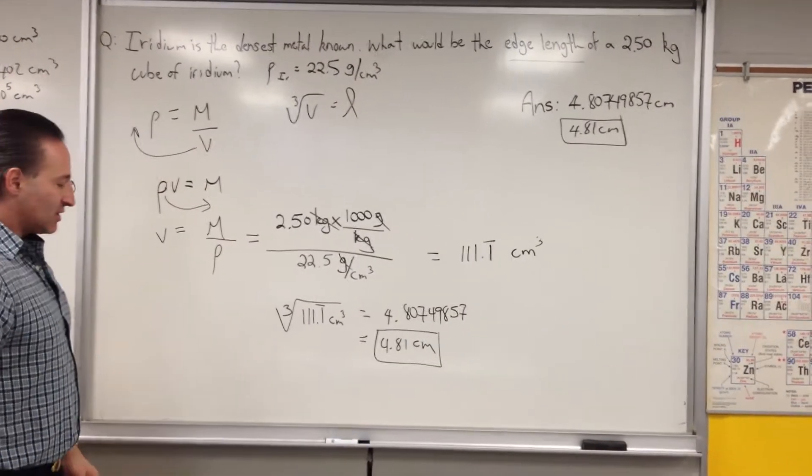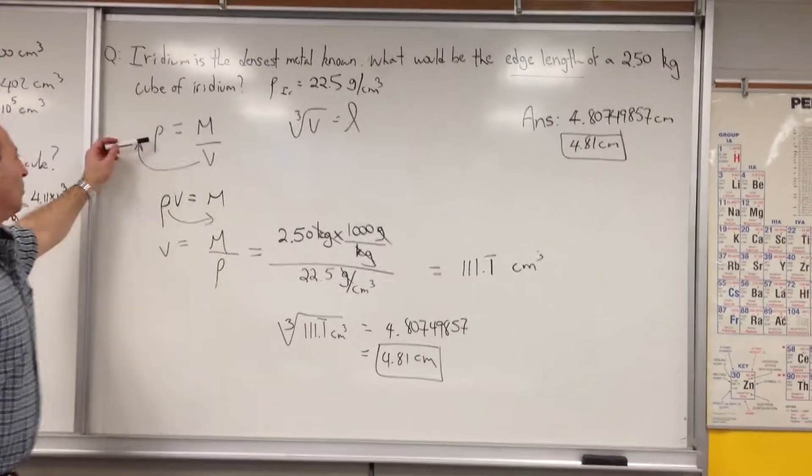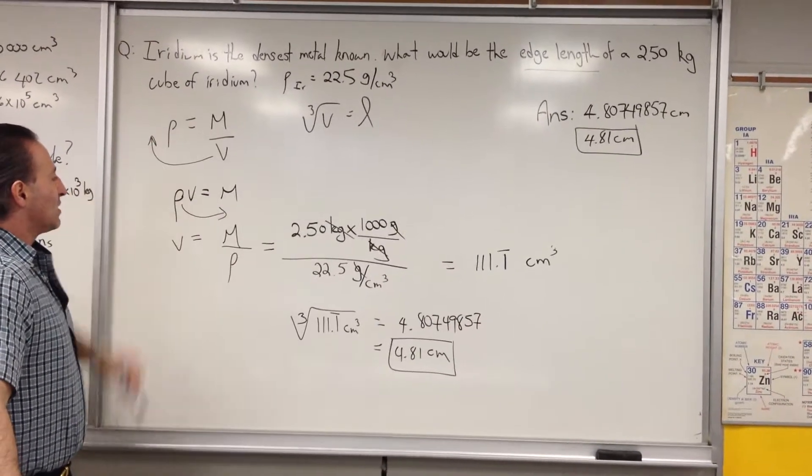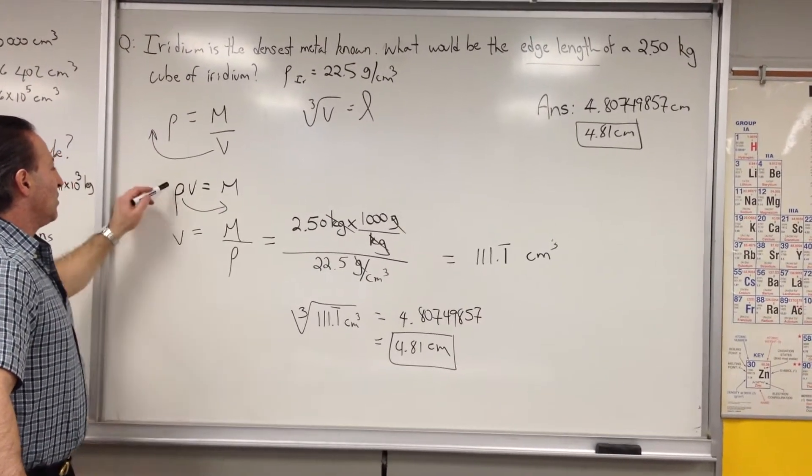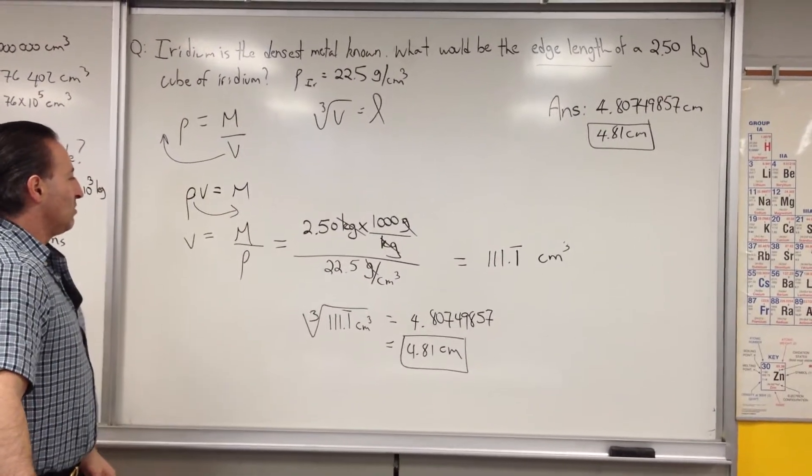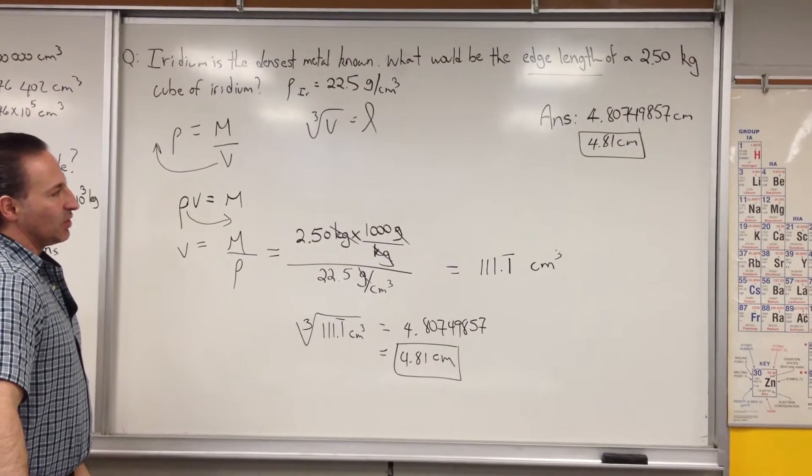We use the density formula. Rho is equal to mass over volume. And we begin by transposing the volume so we can isolate for M. Then we transpose rho so that we isolate V, because we're looking for the volume of the cube.